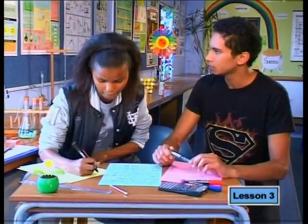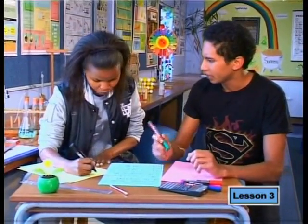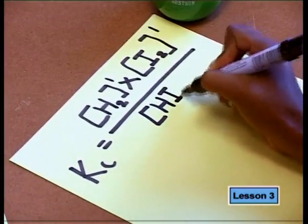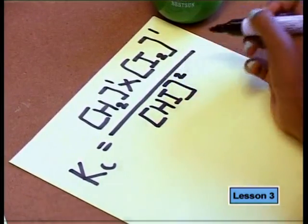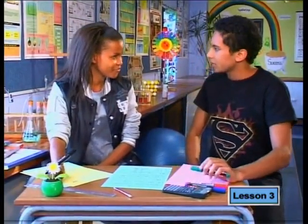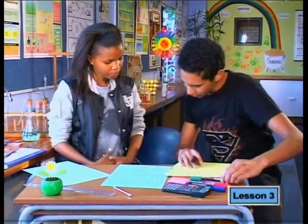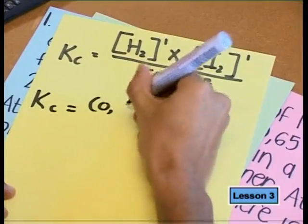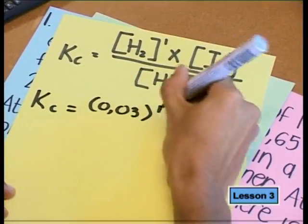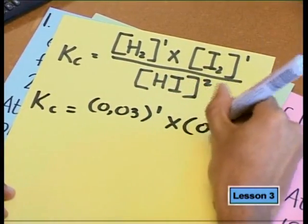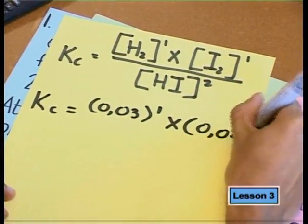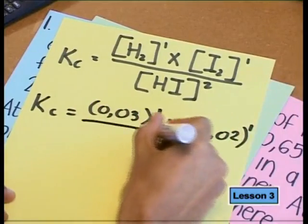We put product concentrations at the top and reactant concentrations at the bottom. The products are hydrogen and iodine, and the reactant is hydrogen iodide. Don't forget to put the 2 as the exponent. Now we substitute our values: the concentration of hydrogen is 0.03, the concentration of iodine is 0.02, and the concentration of hydrogen iodide is 0.06.